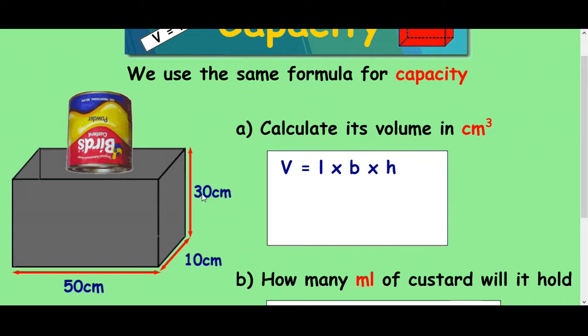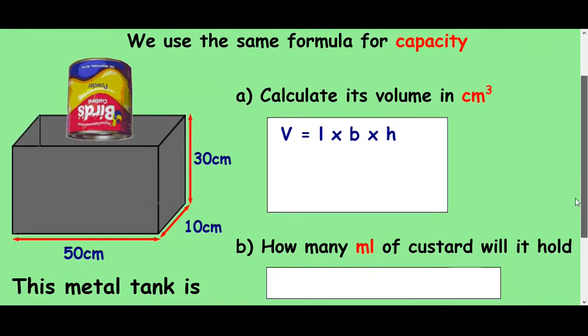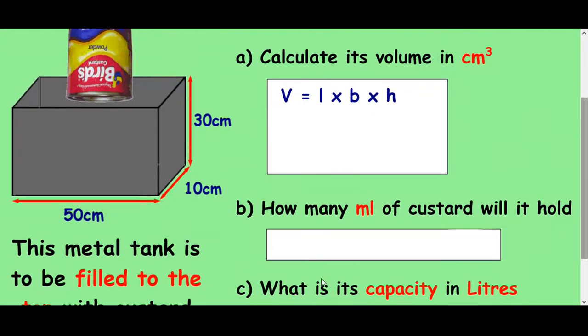Okay, so we've got 30 centimeters, 10 centimeters and 50 centimeters. So the question starts saying calculate its volume in centimeters cubed. So we just use our normal volume formula for that: length times breadth times height.